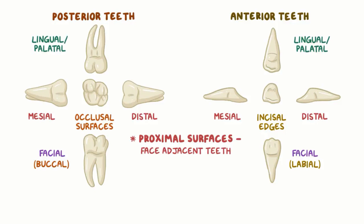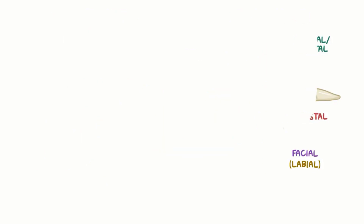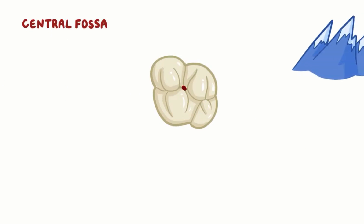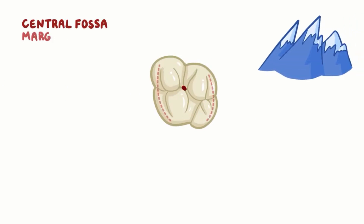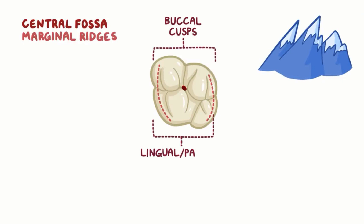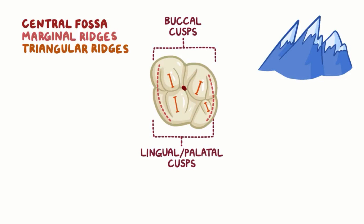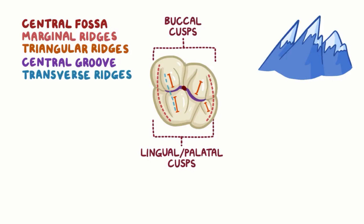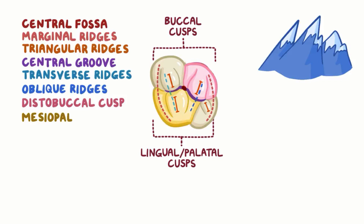Facial surfaces of posterior teeth are sometimes called buccal surfaces. The ones of anterior teeth that face the lip are called labial surfaces, and those that face the tongue on lower teeth are called lingual surfaces, and the surfaces that face the palate on the upper teeth are called palatal surfaces. Each anterior tooth, including the central and lateral incisors and the canines, has a cingulum, which is the name of the little hump about one-third of the way from the gums toward the occlusal surface of the tooth. The occlusal surfaces of the molars and premolars have a central fossa and ridges, like a mountain ridge, that arise from cusps. The marginal ridges connect the buccal and lingual or palatal cusps, and the triangular ridges start at cusp tip and terminate in the central groove. Transverse ridges connect facial and lingual cusps through the center of the tooth, and oblique ridges, which are only seen in upper molars, connect the distobuccal cusp to the mesiopalatal cusp.